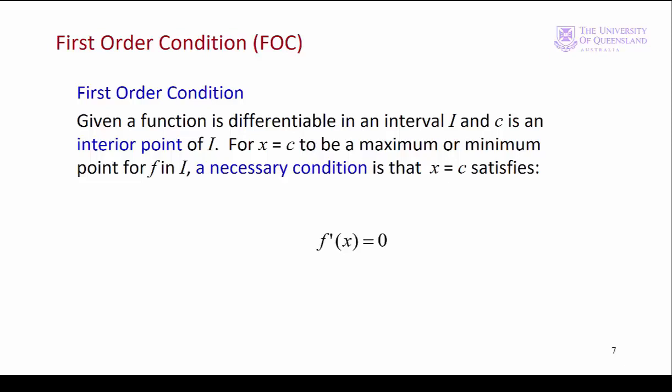The value of x we obtain, c, could be a maximum or a minimum. We see by our definition that c is an interior point over the interval i. Why is c an interior point? We know from lecture 4 that a differentiable function is smooth and continuous. At either end of the domain the function is no longer continuous, so c can't be an end point.